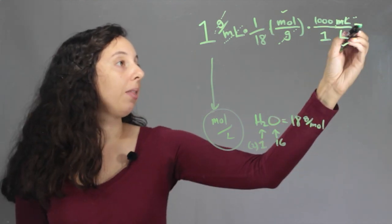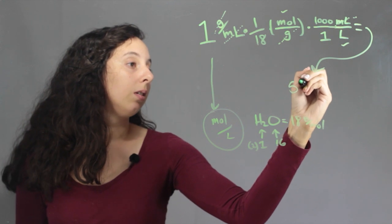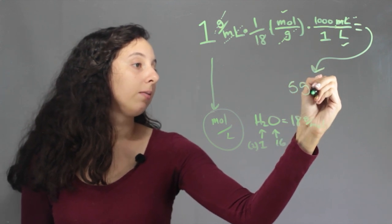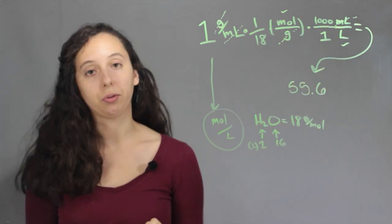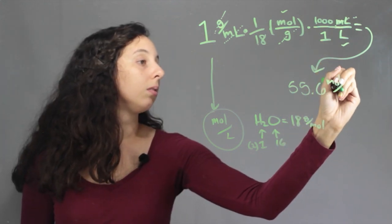And so if we go ahead and do the math, it's actually going to equal 55.6, use three sig figs, moles per liter.